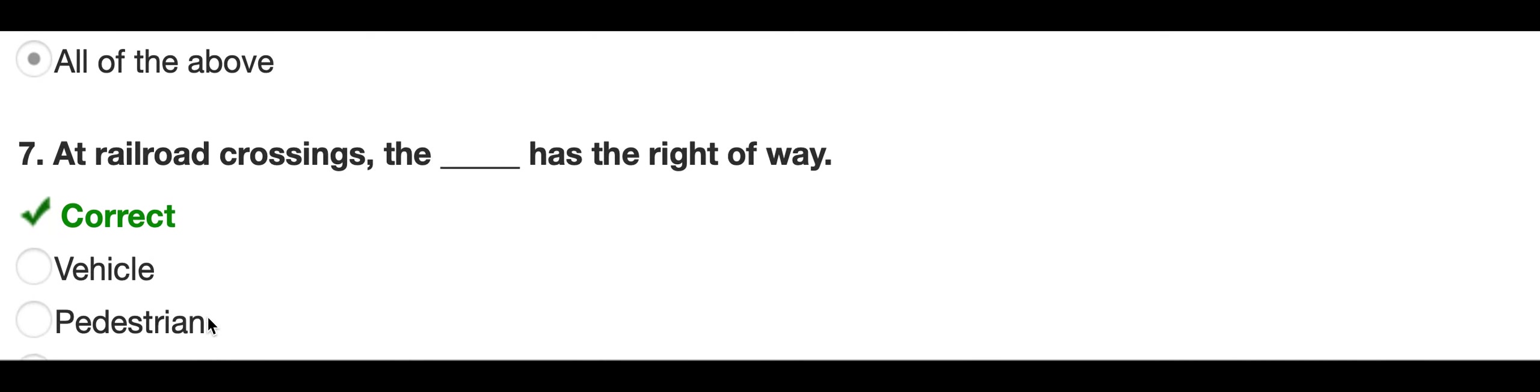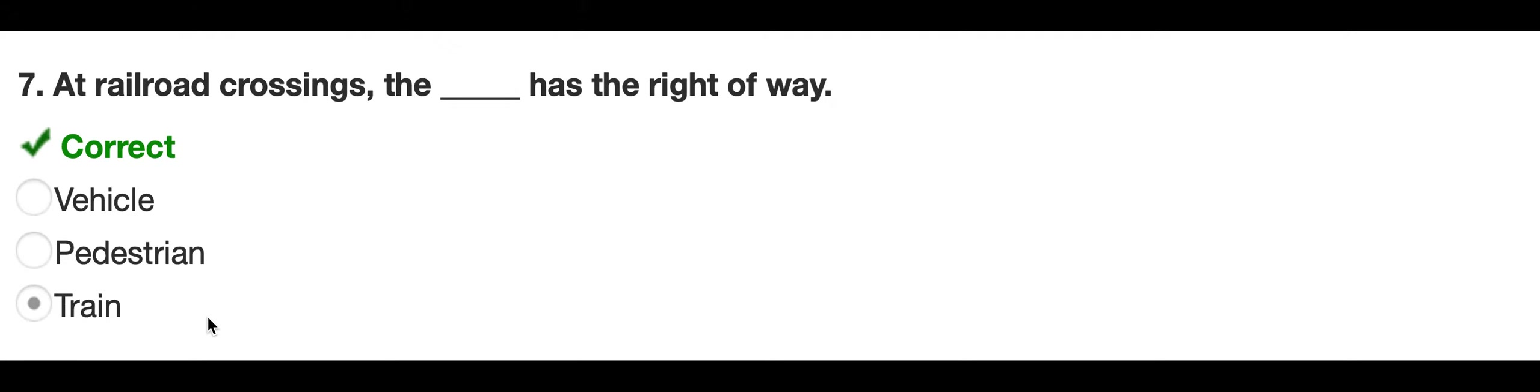Number seven, at railroad crossings, the blank has the right of way. I selected train. At the railroad crossings, the train has the right of way. That is correct.